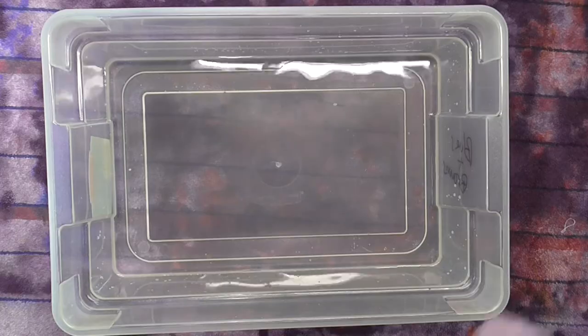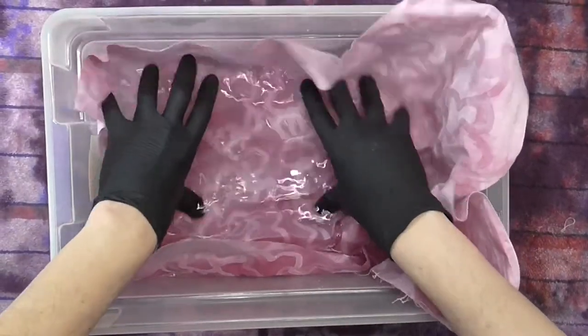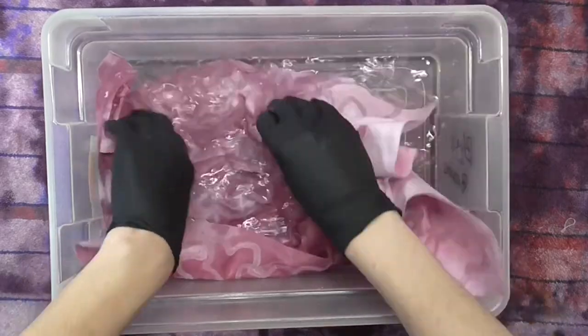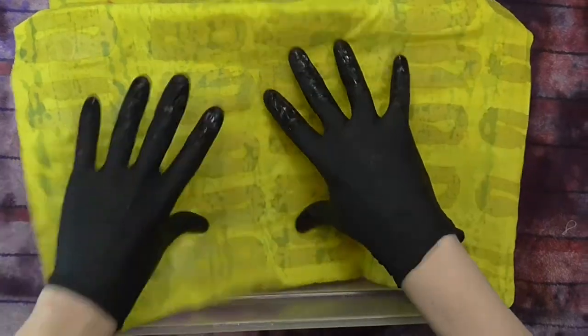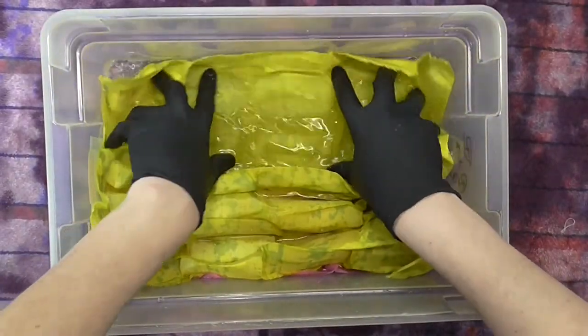In a separate container, soak the waxed fabric in cool water. This just helps the dye travel better over the fabric. Although this technique does account for some variance in the coverage, the cold water bath just ensures that the bulk of the surface will be covered by dye.